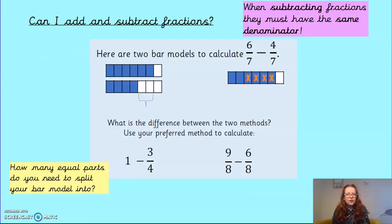Here is two different ways to subtract using bar models. Now, again, top tip reminder, when subtracting fractions, they must have the same denominator. So that's something to put in your head. Okay. Both of these show 6 sevenths take away 4 sevenths. So let's look at this one first.